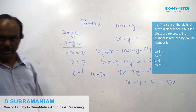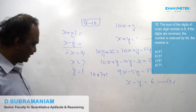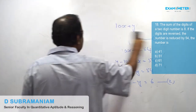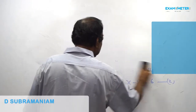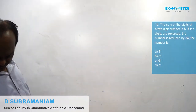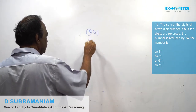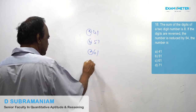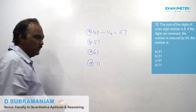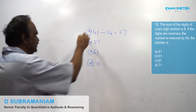This problem can also be solved with multiple choices. The options are 41, 51, 61, 71. Reverse of 41 is 14; difference is 27. But the question says the difference would be 54, so this is not the answer.